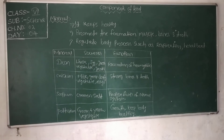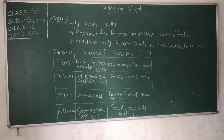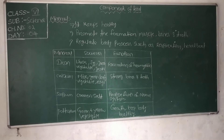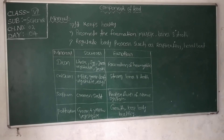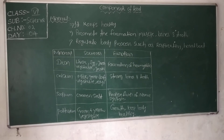For example, proteins cannot build muscles by themselves. They build muscles with the help of minerals only. Mineral is needed for the health of proteins and carbohydrates to build muscle. Protein and minerals together act as body builders and repair agents. In particular, minerals alone do not build the body.